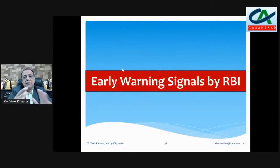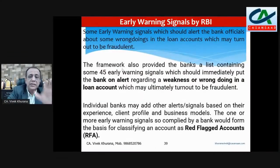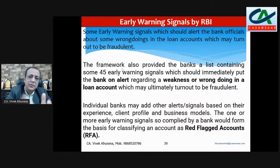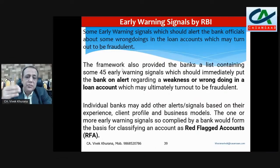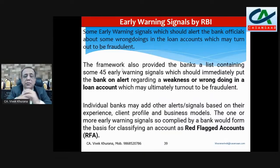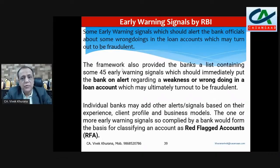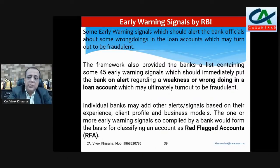RBI has issued 45 early warning signals that banks must watch. Banks can also add their own signals. You can check whether there are weaknesses in these loan/advance accounts or any fraudulent activities. If these signals are present, red-flag these accounts. As an auditor, you can also report in LAFAR accounts which the bank has not red-flagged but you believe should be.